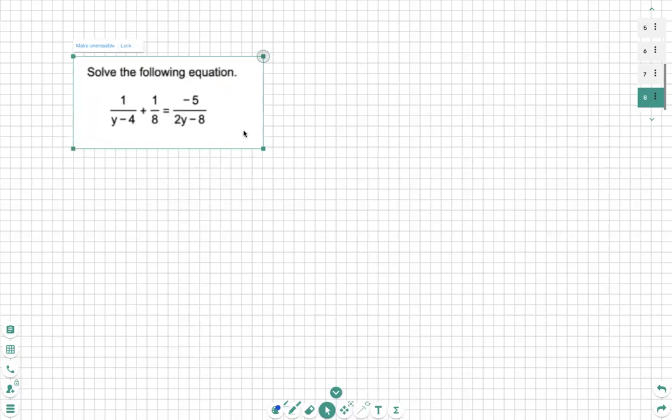We need to recognize that this is a rational functions equation. There's an equal sign, so we're not just combining the common denominators. We're going to try and get rid of all of them.